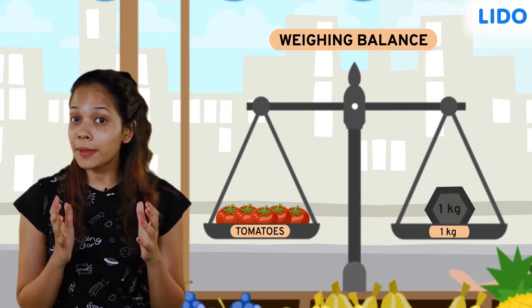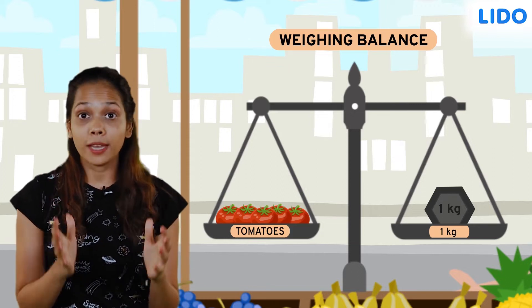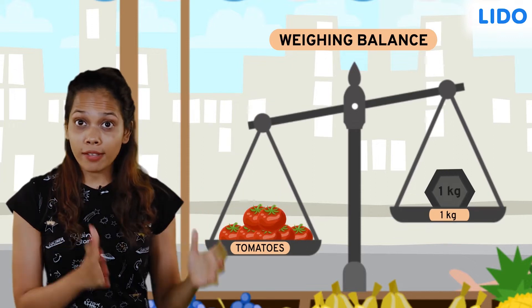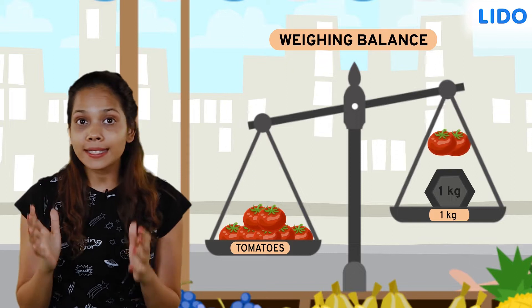To maintain the balance, it is important that whatever changes are made on the left pan should be made on the right side as well. Like if we add 2 tomatoes on the left pan, then 2 similar sized tomatoes should be put on the right side as well.